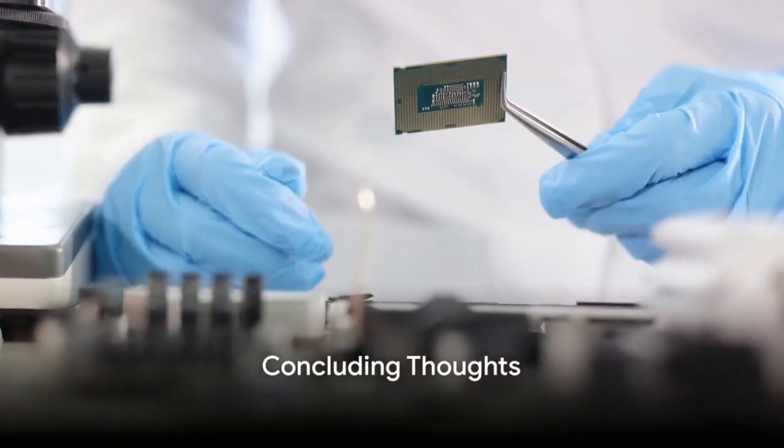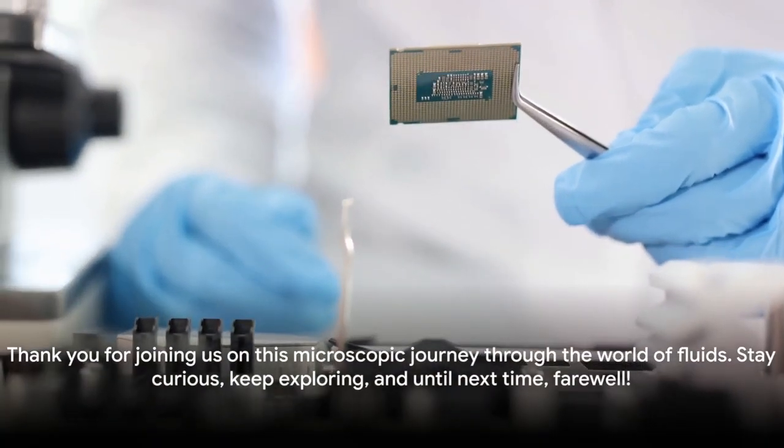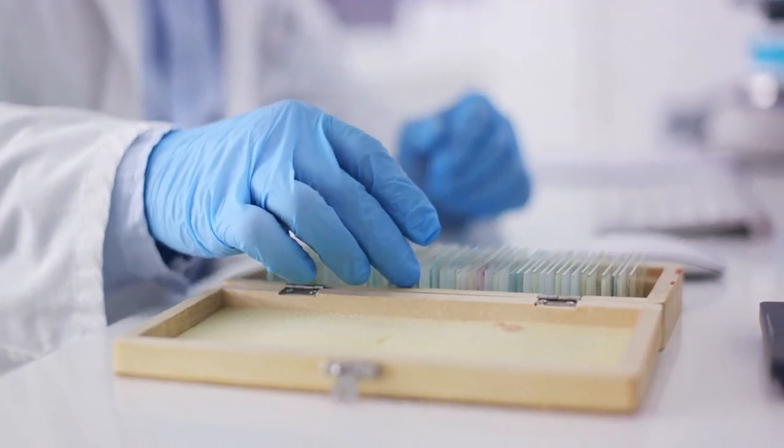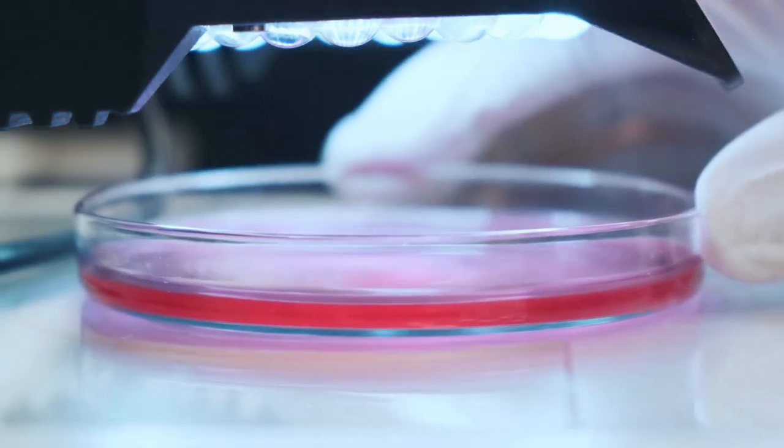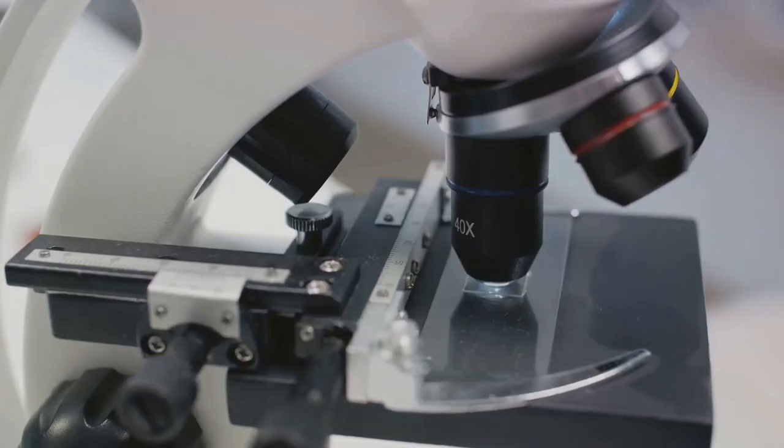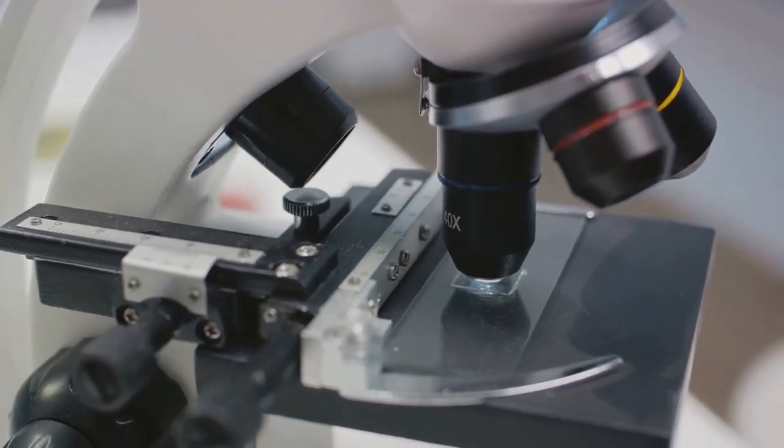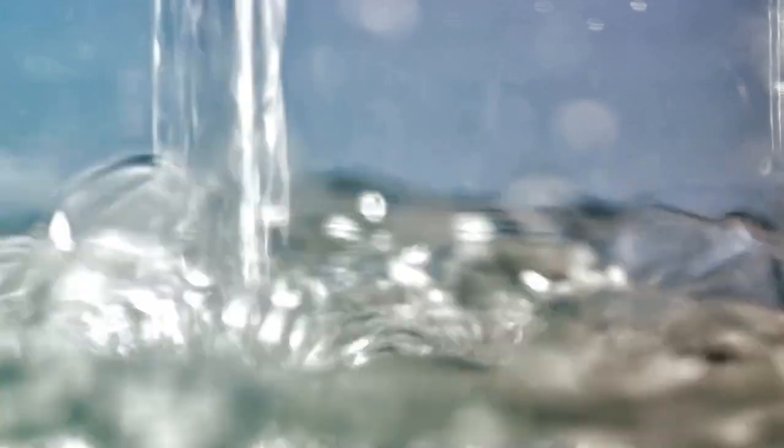We've covered a lot of ground today, from understanding what microfluidics is, to exploring its applications and future potential. Now let's take a moment to revisit some of the key points we touched on. We started by delving into the intriguing world of microfluidics, a field that operates on the micro scale, manipulating fluids within channels less than one millimeter in diameter. We discovered that this field is far from insignificant. In fact, it's a powerful tool that's revolutionizing industries from healthcare to environmental science. We then broke down the mechanics of microfluidics, learning about the unique properties of fluids at the micro scale. We explored concepts like laminar flow and surface tension, and how these play a crucial role in the behavior of fluids. This understanding allows us to control and direct tiny amounts of fluids with precision, making microfluidics a game-changer in many fields.